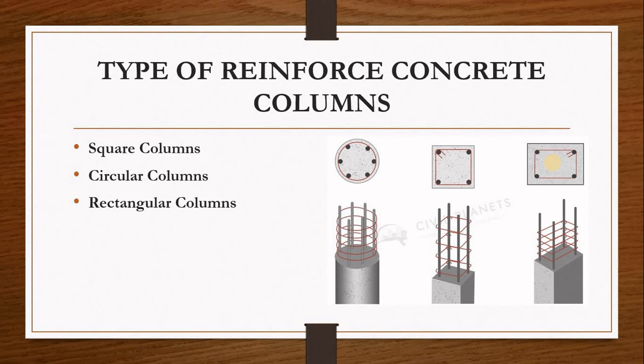These are the three types of columns a structural designer is going to design in a building. This will depend on the designer's choice — the designer can use a square column, a circular column, or a rectangular column, based on what type of column is more economical or safer for the building. This comes down to the structural designer's preferences.